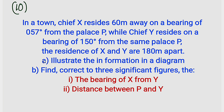Let us start with the first one — illustrating this information in a diagram. There is something very important in bearing: that word 'from.' Whenever you hear the word 'from,' it means you should measure whatever from that position, whether it is an angle or a distance. So we are going to calculate 57 degrees from P, measuring 60 meters down to X.